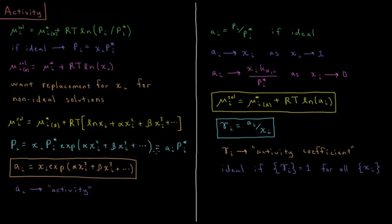This is defined as the activity of that component times the vapor pressure of pure component i. So here we are defining the quantity activity such that activity is equal to the mole fraction of the component times the exponential of alpha times mole fraction squared, plus beta times mole fraction cubed, etc. All the non-ideal behavior encapsulated by these extra coefficients — we take the exponential of all those things, wrap that in, multiply by the mole fraction, and call that activity.